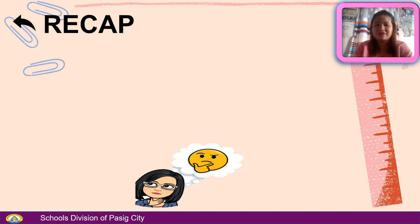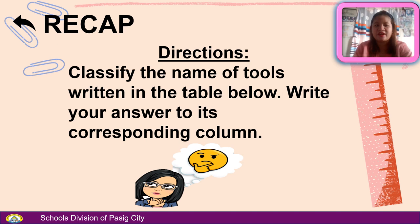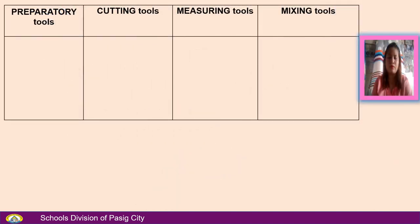Before we start our lesson, let's do a recap of our previous lesson. Classify the names of tools written in the table below. Write your answer in its corresponding column. First column: preparatory tools. Second column: cutting tools. Third column: measuring tools. Fourth column: mixing tools.